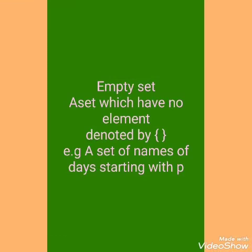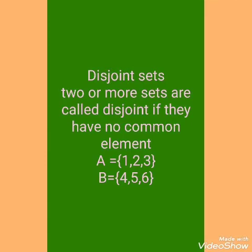Next one is Empty set — a set which has no element. It is denoted by empty curly brackets. An example is a set of names of days starting with B. Do you know any name of a weekday that starts with B? No. So this is an empty set.